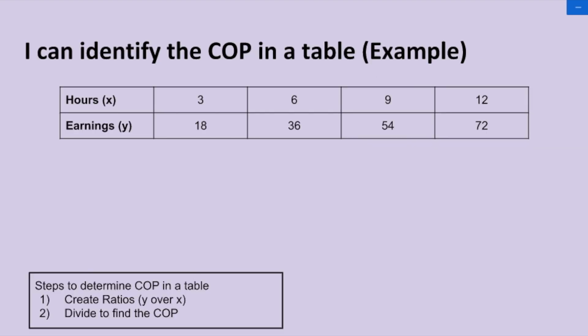So first we're going to identify the COP in a table. And the steps to determine the COP in a table is one, create ratios y over x. So I'll write that down now. We got the y value divided by the x value.